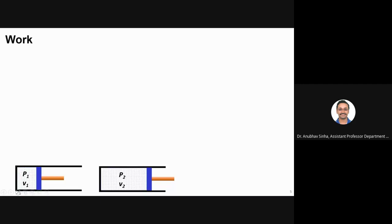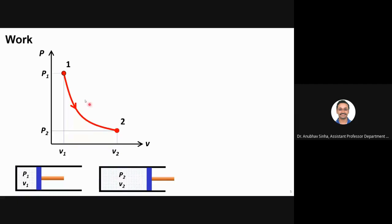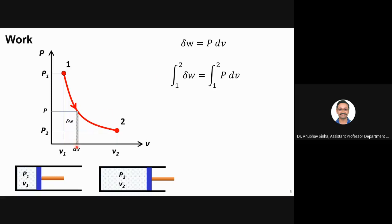Now what about a process? Let us say I have an initial point at state P1, V1. The system begins to expand and finally reaches P2. The process goes from state 1 to state 2, and I want to find the work done during this process. As defined, delta w equals P·dv. I can take a small slice corresponding to dv where the pressure is approximately constant over that small differential element — that is my delta w, the product of pressure P and small volume change dV.